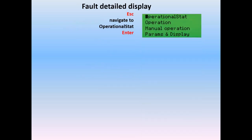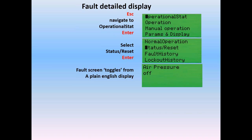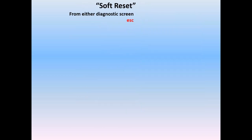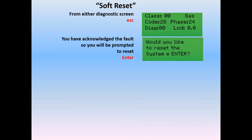From that screen, from operational stat, we escape, go back to operational stat, enter operational stat — just like the screen told us. In this case, we go to status reset versus normal operation and press enter on status reset. Now the screen toggles between the plain English 'air pressure off' and a much more detailed diagnostic display, giving us loads of information on the exact error at the current time. We can then perform a soft reset from either of the two diagnostic screens. We can simply escape the diagnostic screen. Since we have seen the fault in detail, we have acknowledged it and will be prompted if we'd like to reset the fault with enter. At this point, if you hit enter, reset is displayed on the screen and the fault is cleared.